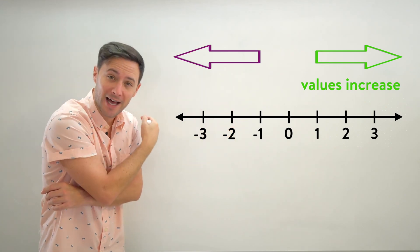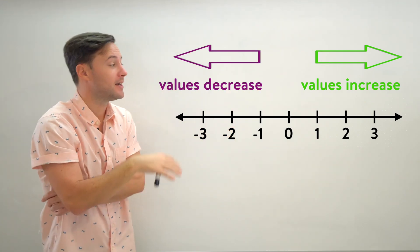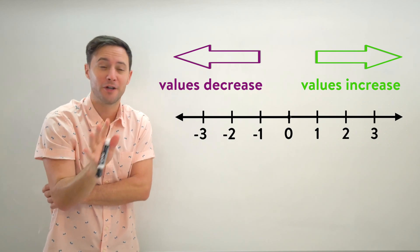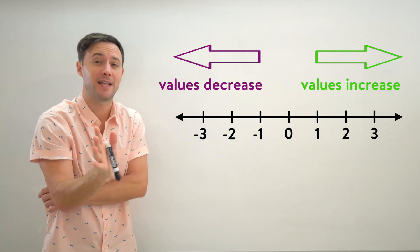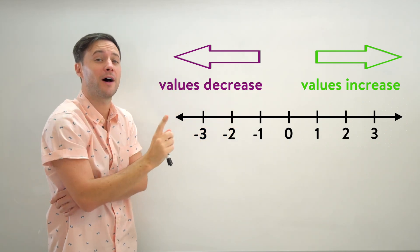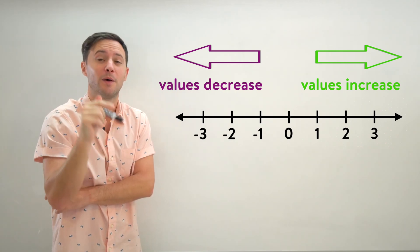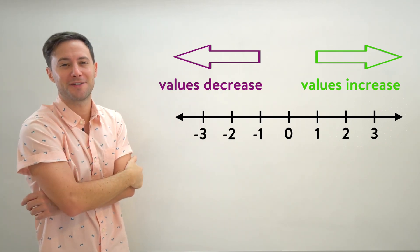And naturally when you move to the left, the values decrease. That is really important to think of and understand. Anytime you move to the right, the values increase, to the left they decrease. With that in mind, let's get to the first example.